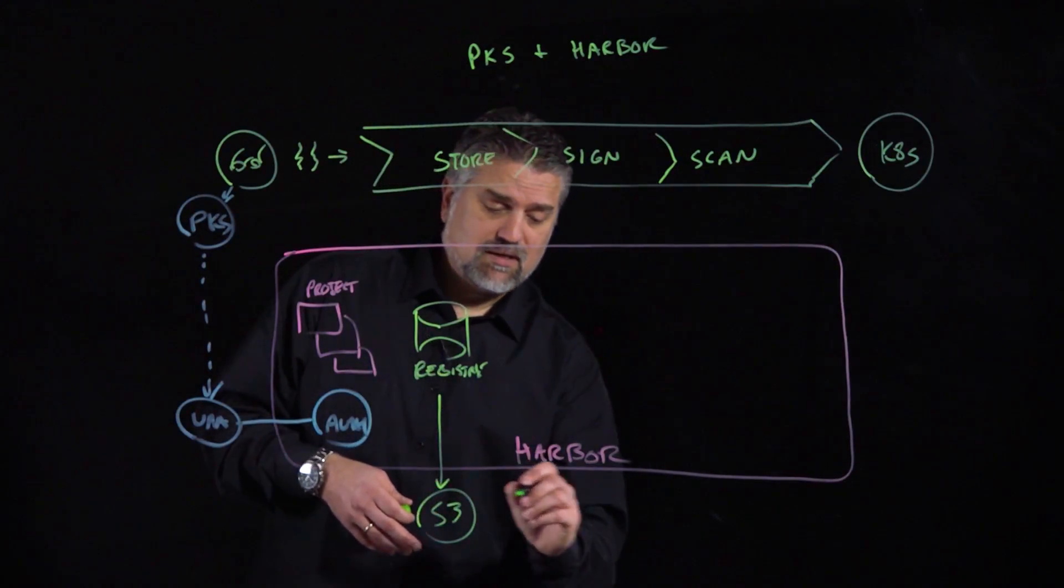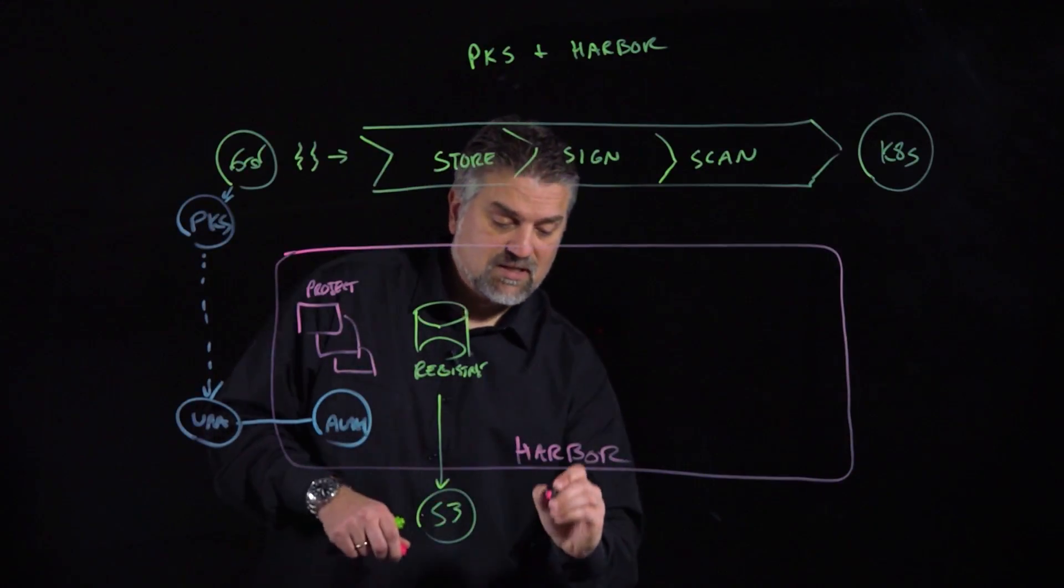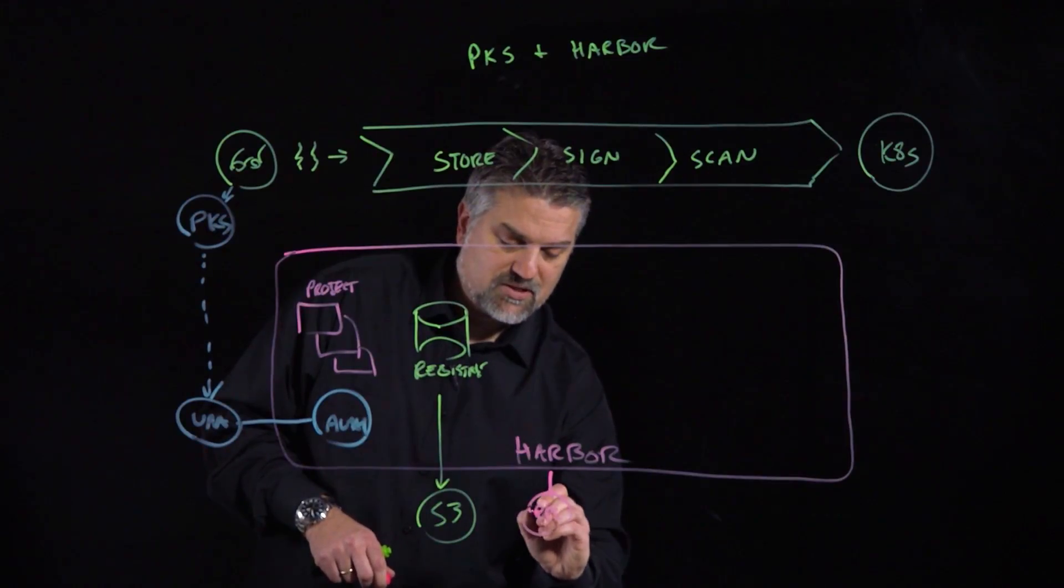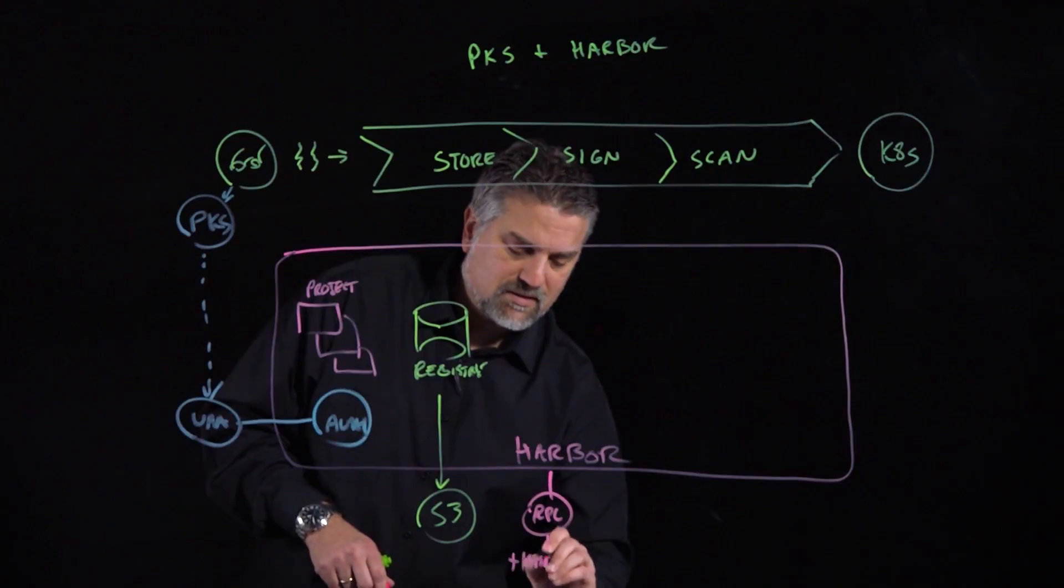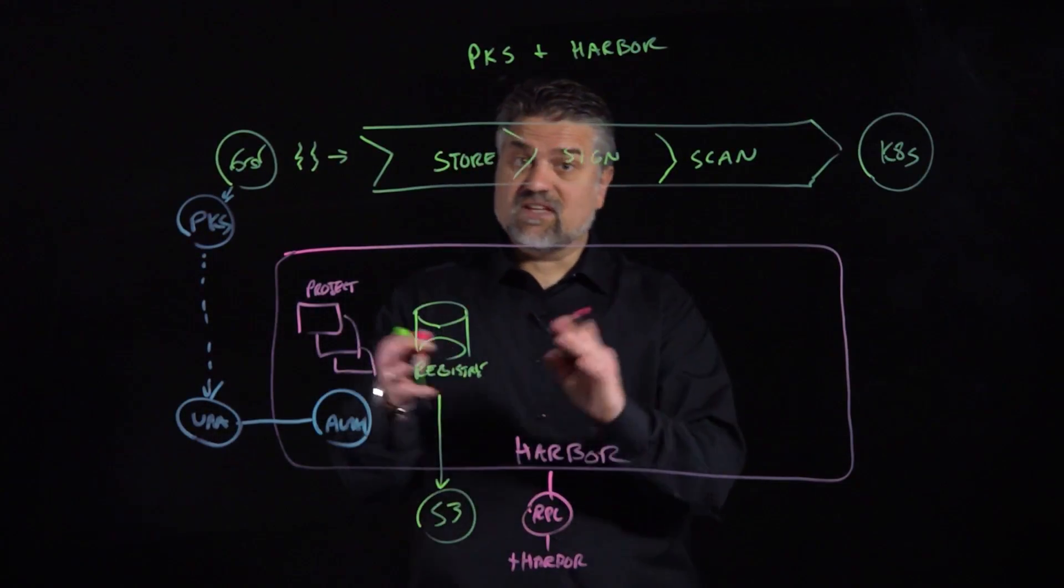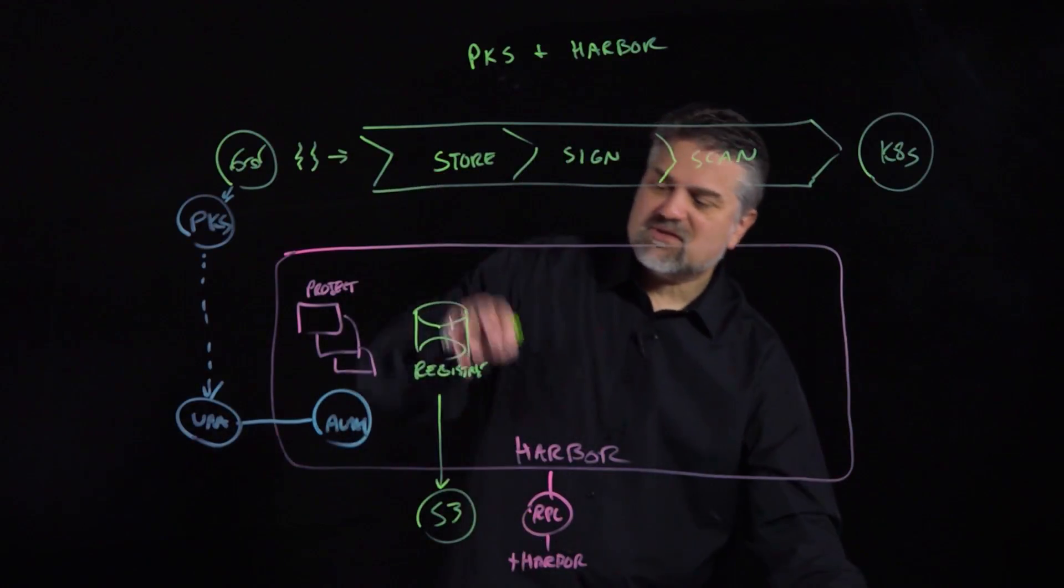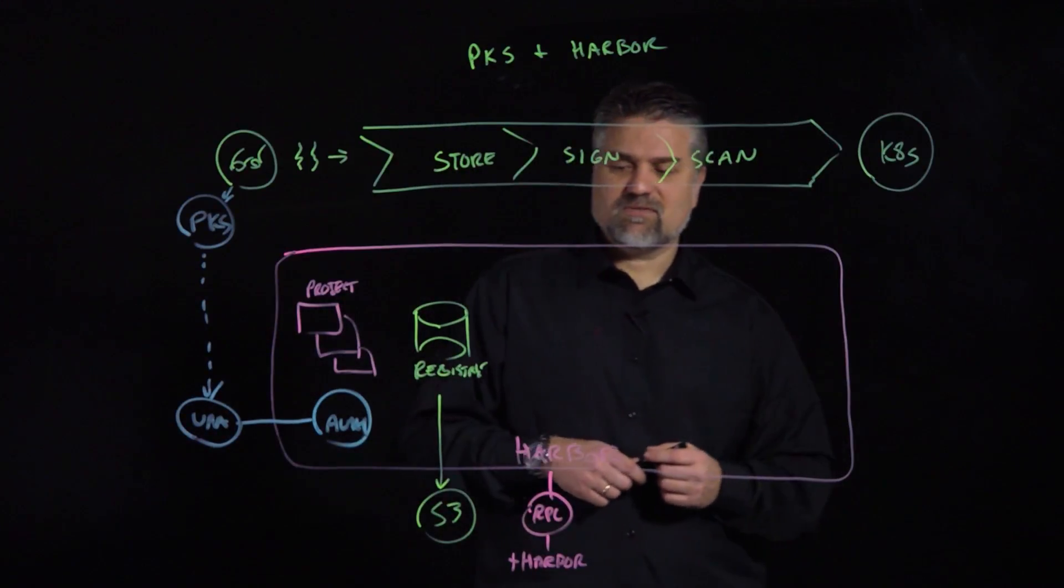And Harbor itself can actually support the capability of doing replication. So, we can actually replicate out to another Harbor instance externally if we want to make sure that we have good image backup for our images, or good image availability, not just backup, but availability in other locations. So, that's the first easy part. That's a registry. That's what every registry does. But Harbor does another couple of unique things.